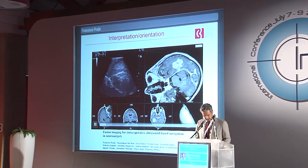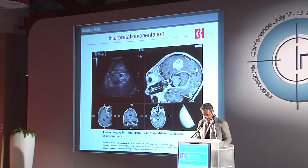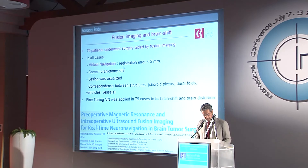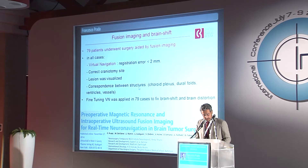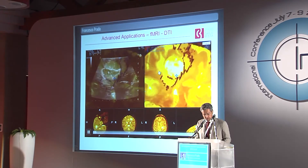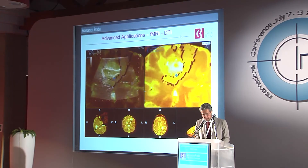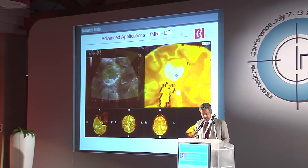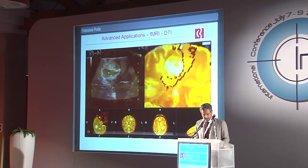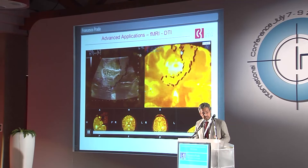We published our results two years ago regarding this procedure, and we tested the accuracy of this system on a series of 79 patients, in which the registration error was less than 2 mm in all cases, and the craniotomy was placed correctly in all cases. Fine-tuning was performed throughout the procedure in all cases to fix brain shift and brain distortion. Fusion imaging can also be performed with advanced applications such as fusion with fMRI and DTI, which is very important particularly for tumors located in eloquent areas, and it's important at the end of resection to locate structures in case of brain distortion.